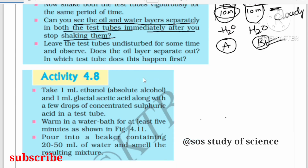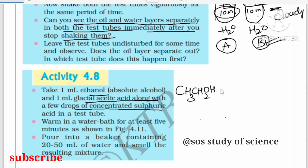Now Activity 4.8: Take 1 ml of ethanol (CH₃CH₂OH or C₂H₅OH) and 1 ml of glacial acetic acid (CH₃COOH) in a test tube. Add a few drops of concentrated sulfuric acid. After adding sulfuric acid, warm the mixture gently, then pour it into a beaker containing 20 to 50 ml of water and smell the resulting mixture.